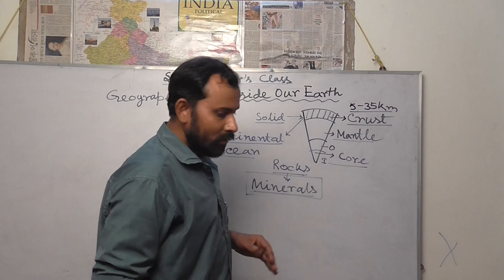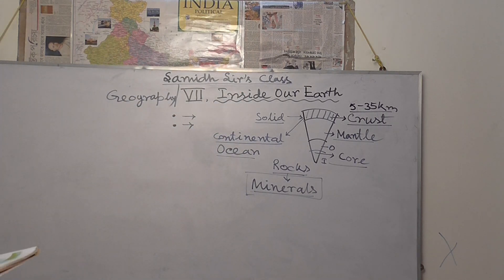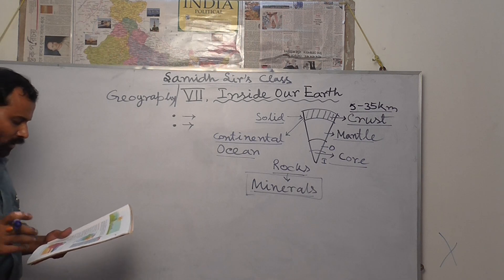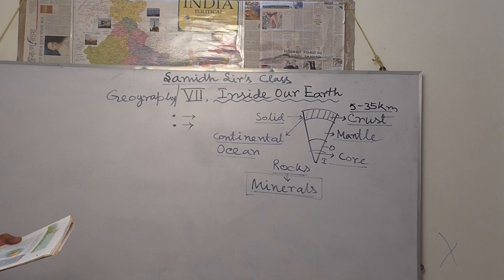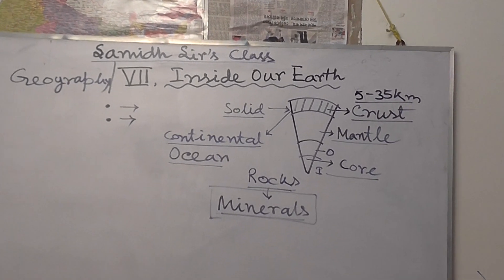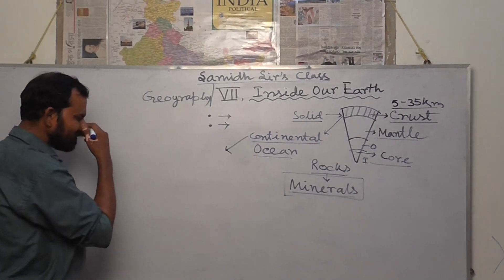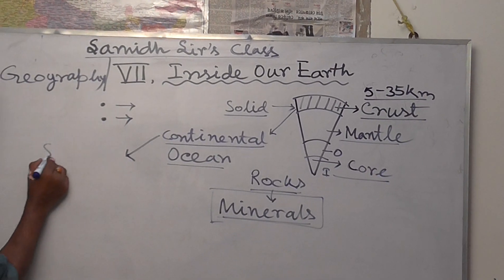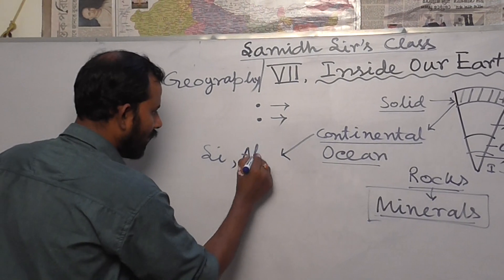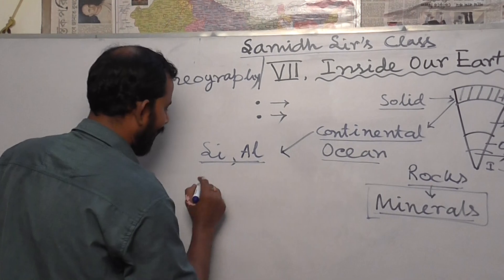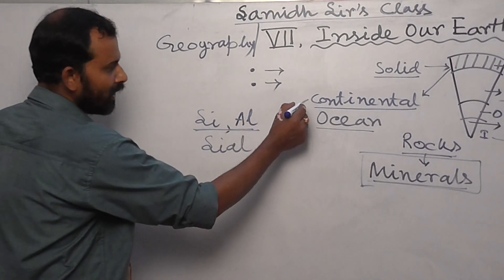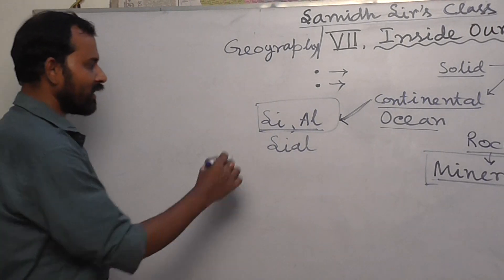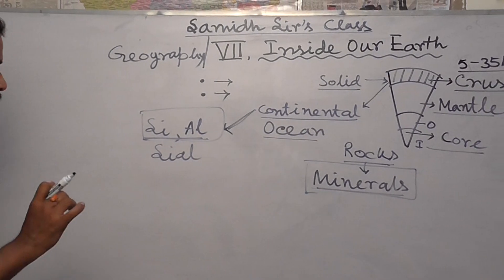The difference between rocks and minerals is that minerals are the materials by which rocks are composed. The continental and oceanic sections are made by specific types of rocks. The main mineral constituents of the continental mass are silica and aluminium. Combined, this continental section is referred to as SIAL — SI for silica, AL for aluminium.